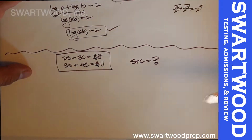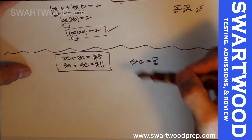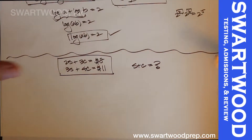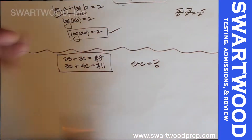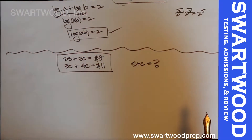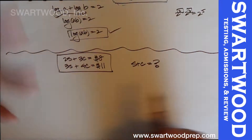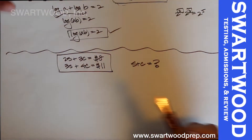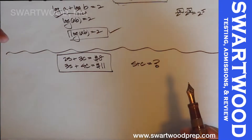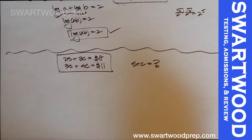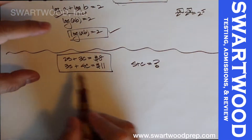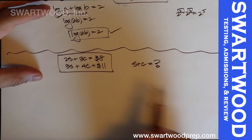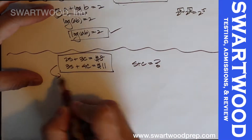You can solve it the standard way by solving each variable and substituting, and that's totally fine. But on the DAT and similar tests, they're often looking to see if you can find a cheap shortcut — in this case, going for s plus c directly instead of each individual piece.